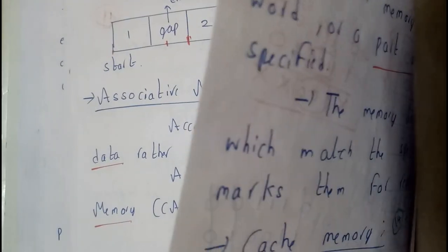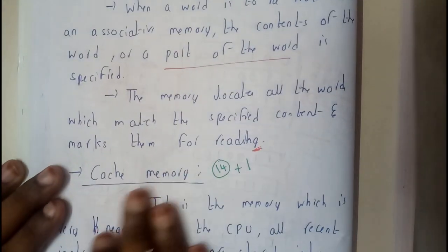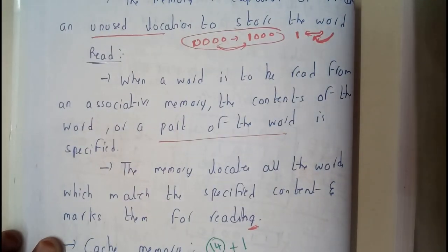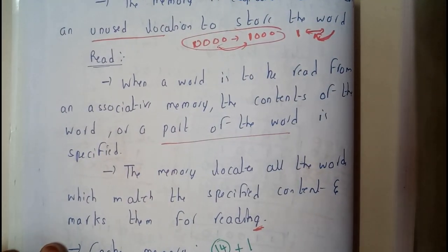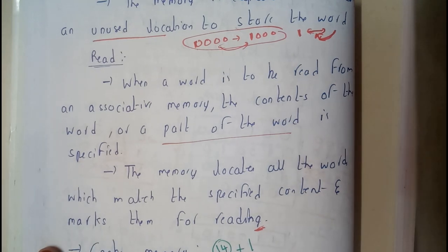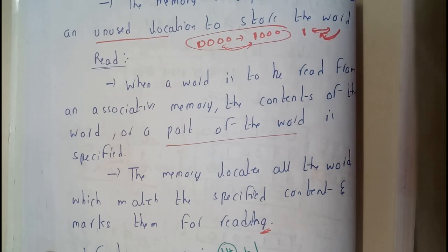In the previous tutorial we went through associative mapping — if you missed that, please go back and watch it, as it is a really important concept. You need to know what associative mapping is before studying these read and write operations. In the next tutorial, we will be going through cache memory. Thank you, thanks for watching.